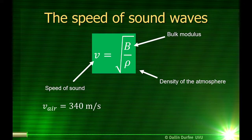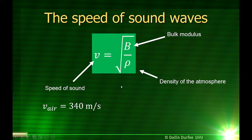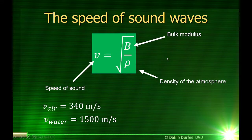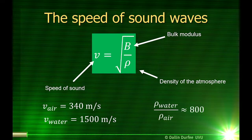The speed of sound in air turns out to be about 340 meters per second, depending on temperature. Water is a lot more dense than air, so you might think the speed of sound would be lower in water. But the speed of sound in water is actually much higher than in air, because while the density of water is greater, the bulk modulus of water is much, much greater than that of air. It's really hard to squeeze water even a little bit, compared to air. So even though water's density is about 800 times that of air, the bulk modulus is so much higher that we end up with a higher speed of sound in water.